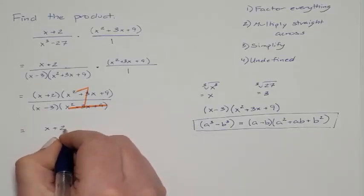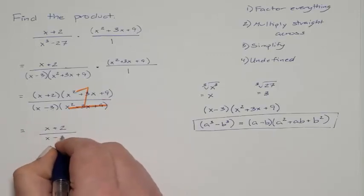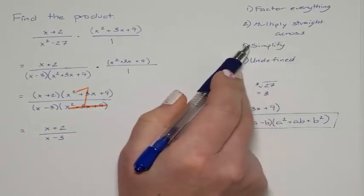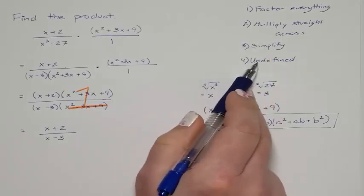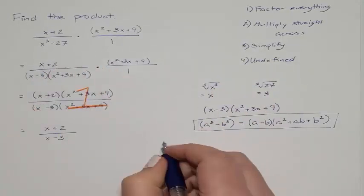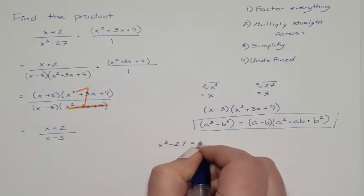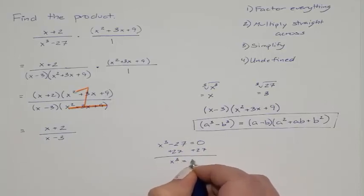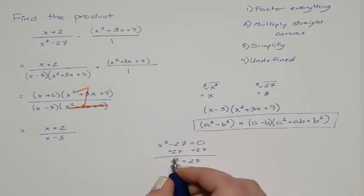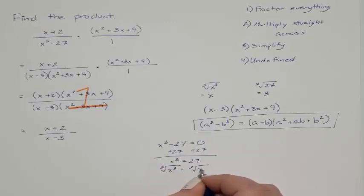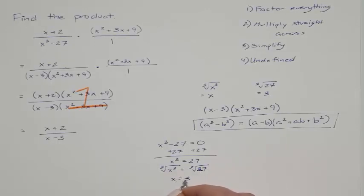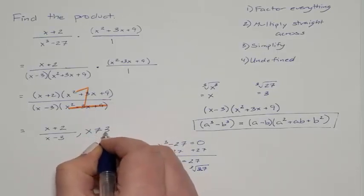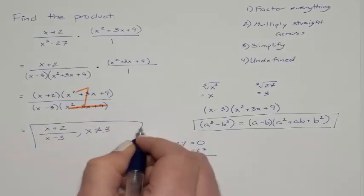We are left with x + 2 in the numerator and x − 3 in the denominator — that is our final simplified answer. But we also need to find the undefined values. Our original denominator x³ − 27 can never equal 0. Solving: x³ = 27, taking the cube root of both sides gives x = 3. So x can never equal 3.